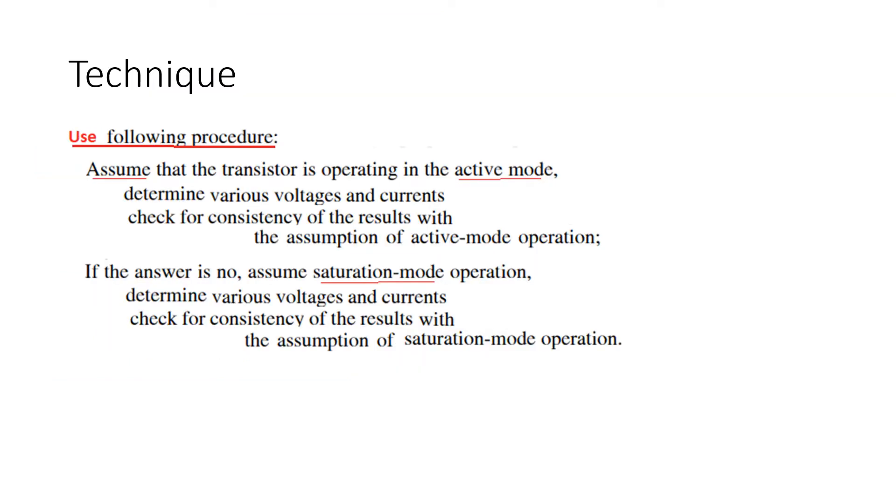So, if you don't know whether the transistor is in active mode or in saturation mode, then the technique that is followed is that we assume it to be in active mode and then find the parameters. And if they do not match, then we assume it to be in saturation mode and find the parameters.